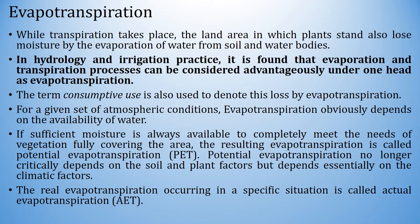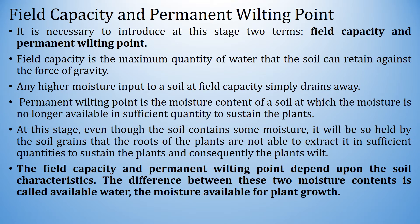If sufficient moisture is always available to completely meet the needs of vegetation fully covering the area, the resulting evapotranspiration is called potential evapotranspiration. Potential evapotranspiration no longer critically depends on the soil and plant factors but depends essentially on the climatic factors. The real evapotranspiration occurring in a specific situation is called actual evapotranspiration and is denoted by the letter AET.